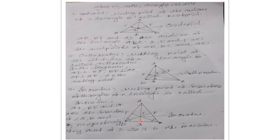A bisector of an angle divides it into two equal parts — BAD and CAD. Similarly, BE is the bisector of angle B, meaning angle ABE equals angle CBE. CF is the bisector of angle C, because CF divides angle C into two equal parts: angle ACF equals angle BCF.